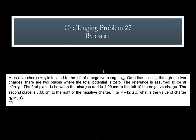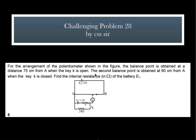Now, I am coming to the next challenging problem. This challenging problem is from electrostatics. A positive charge plus Q1 is located to the left of a negative charge minus Q2 on a line passing through the two charges. There are two points where the total potential is zero. The reference is assumed to be at infinity. The first point is between the charges and four centimeter to the left of the negative charge. The second point is at a distance seven centimeter to the right of the negative charge. If Q2 is equal to minus 12 micro coulomb, what is the value of charge Q1 in micro coulomb? This is another challenging problem for you, another classical problem where you have to think about the property of conductors and accordingly plan.